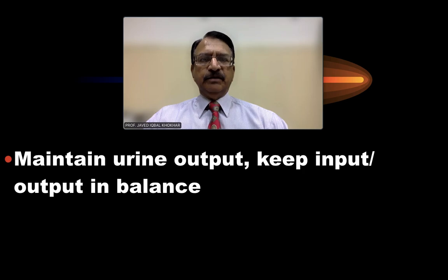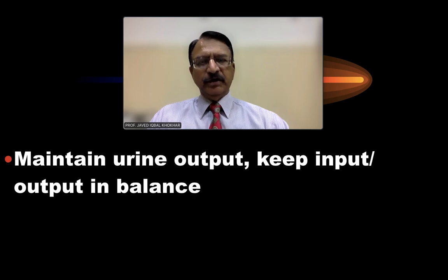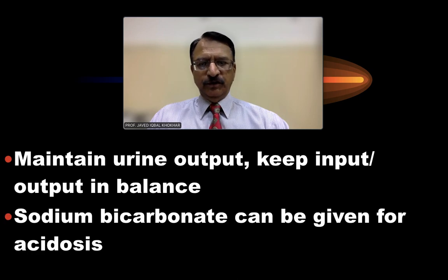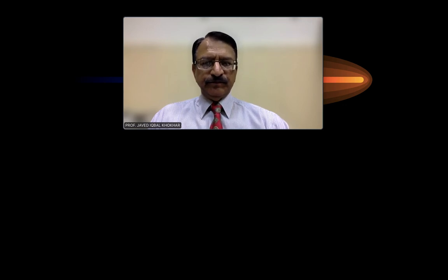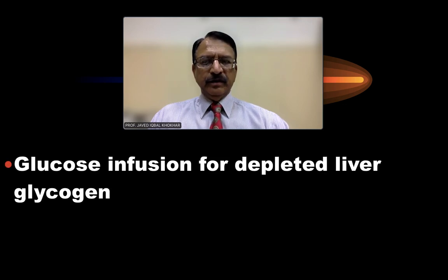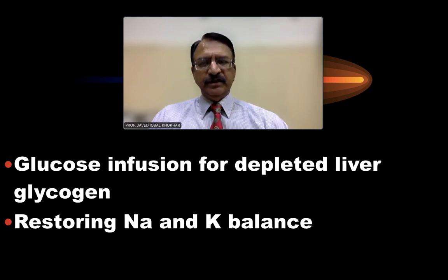If the person is unconscious, we should catheterize and monitor the urine output. Sodium bicarbonate can be given for acidosis. Glucose infusion can be given for depletion of liver glycogen, and we should restore the sodium and potassium balance by monitoring and correcting electrolytes.